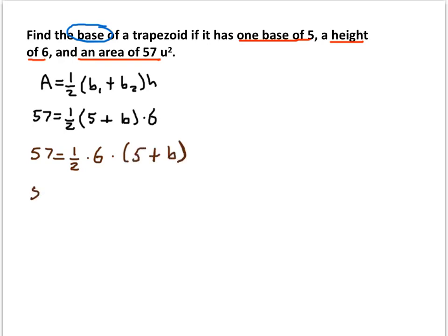And now 1 half times 6, of course, is 3. 3 times the quantity 5 plus b.